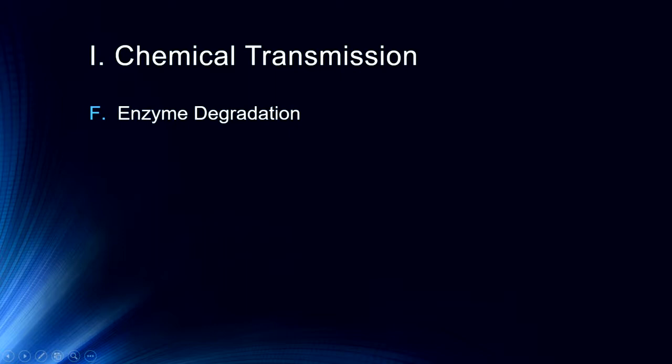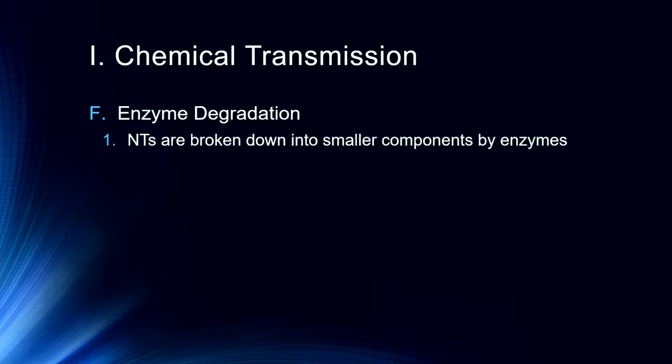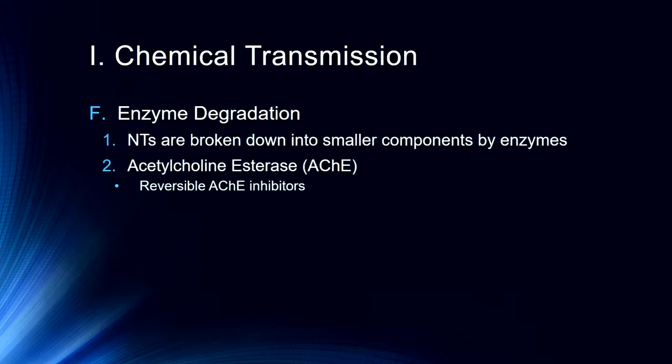In the synapse itself are enzymes which break down neurotransmitters into constituent components that can then be taken away. Often neurotransmitters are too large to cross the blood-brain barrier back into the blood to be disposed of, so they're broken down into constituent proteins. These enzymes include acetylcholine esterase, which breaks down acetylcholine in the synapse. There are also substances which can inhibit acetylcholine esterase.